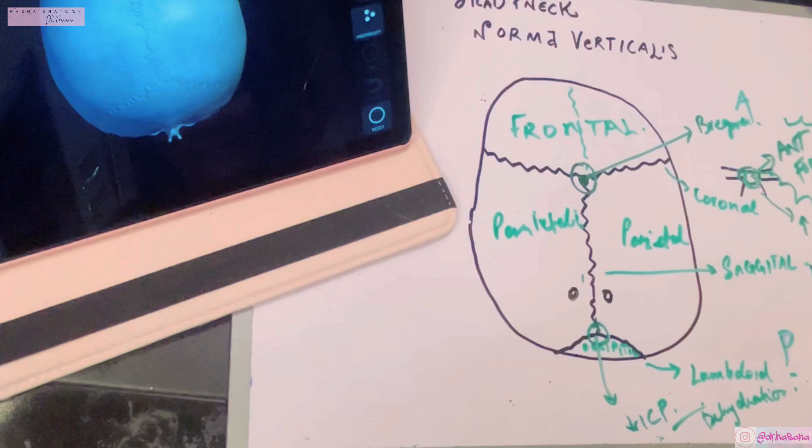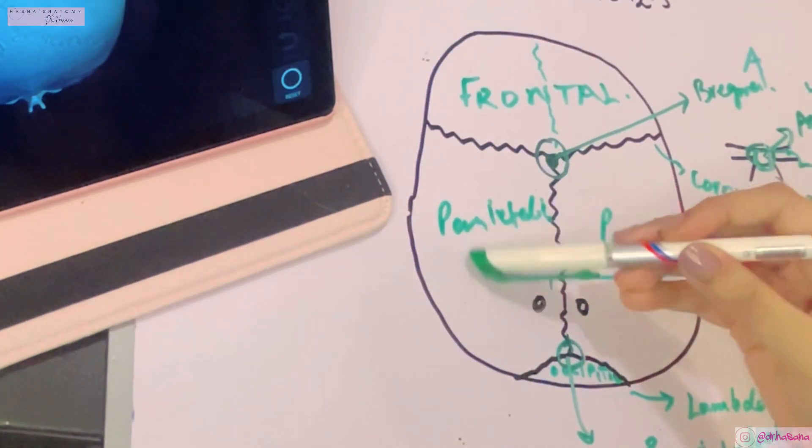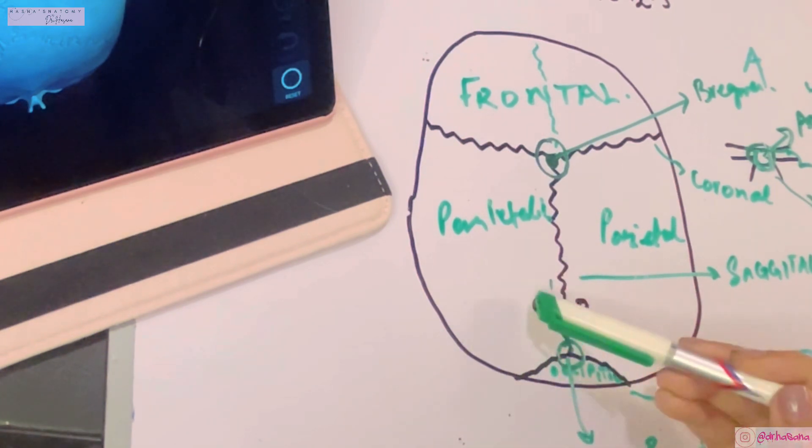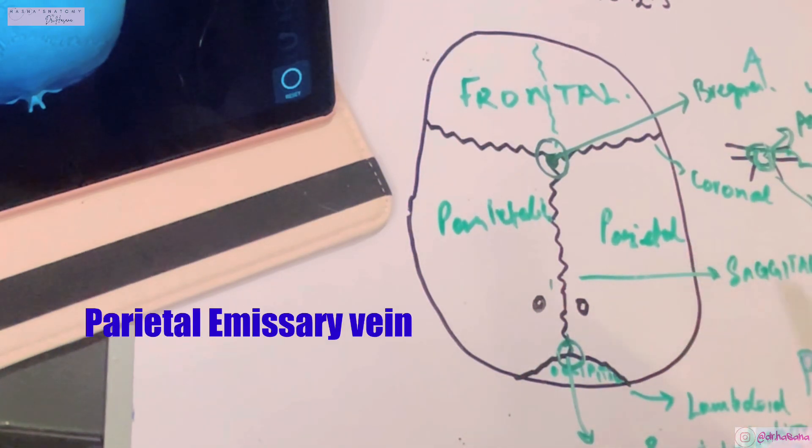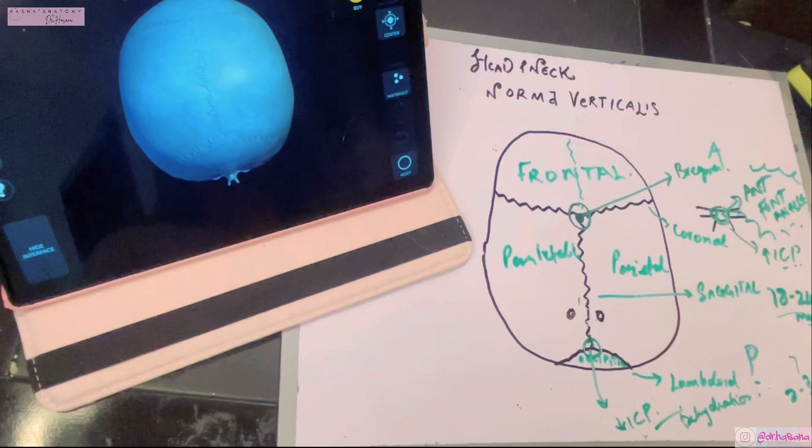On both parietal bones there are some elevations. These are known as the parietal eminences. Another important thing is that about four centimeters in front of the lambdoid suture on each parietal bone, you will find these two foramina. These are known as the parietal foramina. The importance of these is that they transmit the emissary veins from the scalp to the inside of your sagittal sinus. Another important point is the obelion. It lies between the two parietal foramina on the sagittal suture.